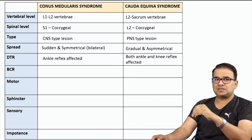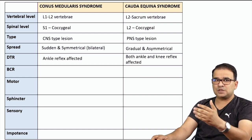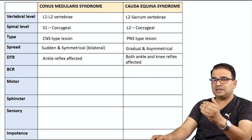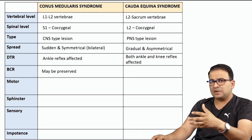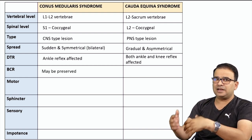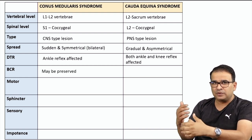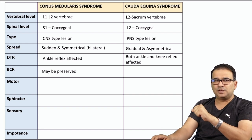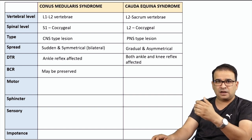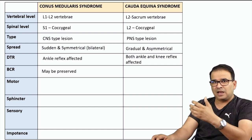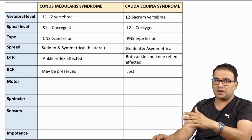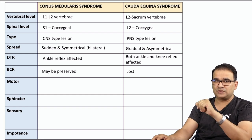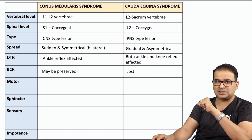Bulbocavernous reflex: in conus medullaris syndrome, it may be preserved and its recovery is a sign of the spinal cord coming out of spinal shock. In cauda equina syndrome, it will be lost, because if the peripheral nerve is gone, there is no nerve to supply that respective muscle.